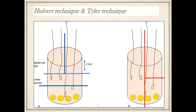The horizontal sections show the follicular architecture with about 14 follicular units and 20 follicles. The vertical section on the right-hand side shows only 6 follicles and does not allow for precise follicular assessment. We can also see two other techniques: the Halver technique, in which the specimen is transected 1 mm below the skin surface creating an epidermal disc and a lower portion; and the Tyler technique, in which the specimen is bisected vertically first, then one half is bisected in the horizontal plane, allowing simultaneous evaluation for both vertical and horizontal sections.